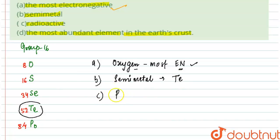The next thing we need to find out is radioactive. Radioactive here is polonium. Polonium, being the heaviest here, has an unstable nucleus and it is a radioactive element.